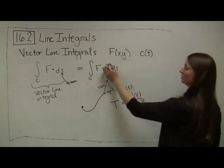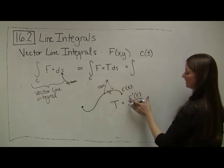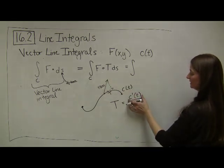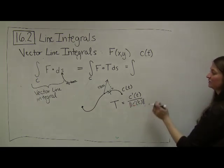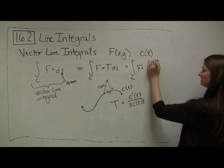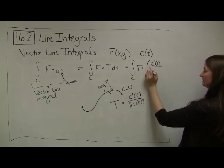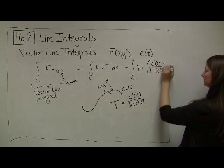Great! We're part of the way there. That means that substituting in the fact that my T vector, my unit tangent vector, is exactly C prime divided by the magnitude of C prime of T. That gives me F dotted with C prime of T divided by the magnitude of C prime of T dS.